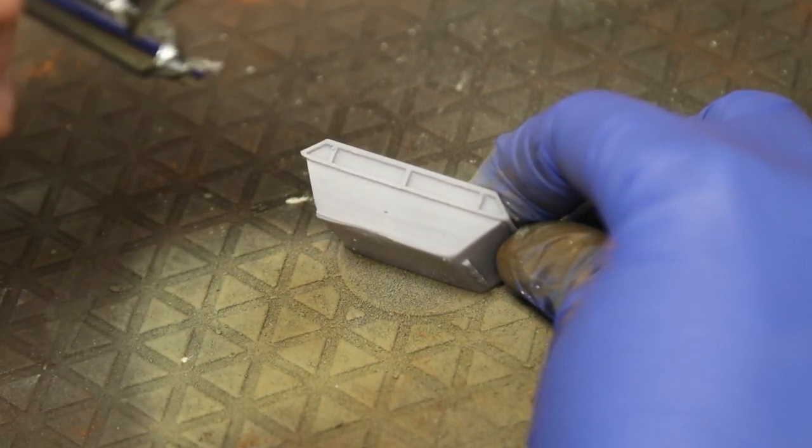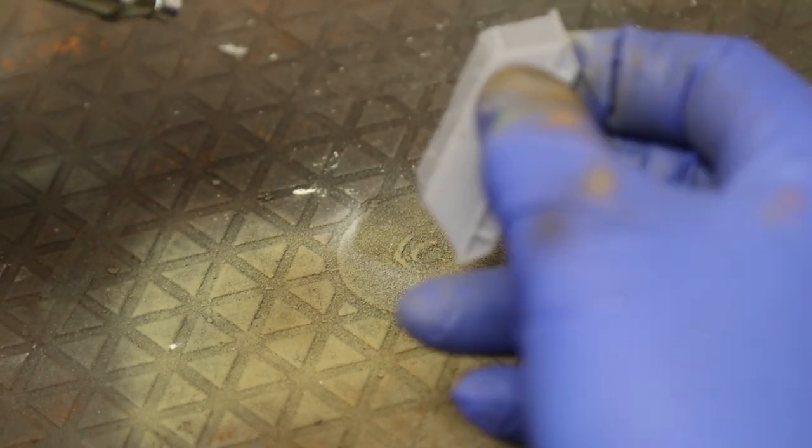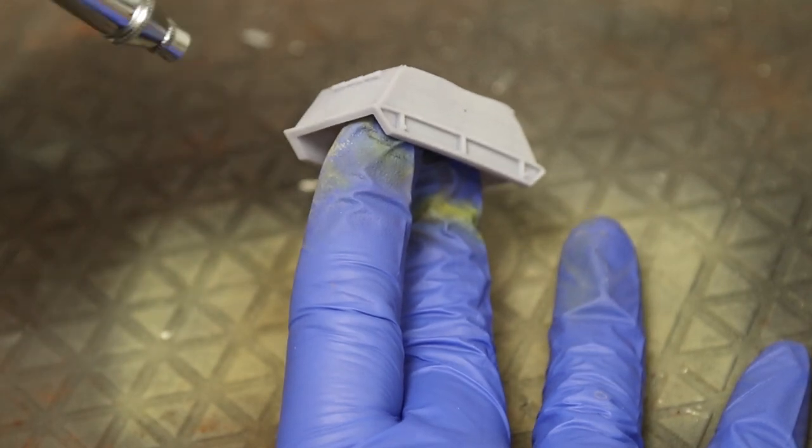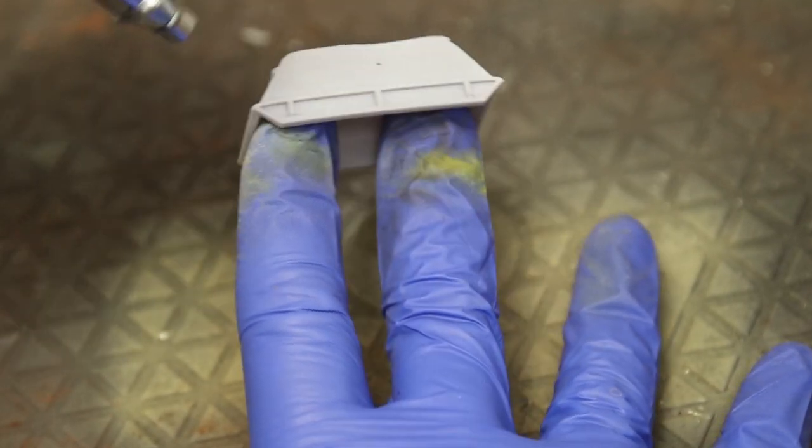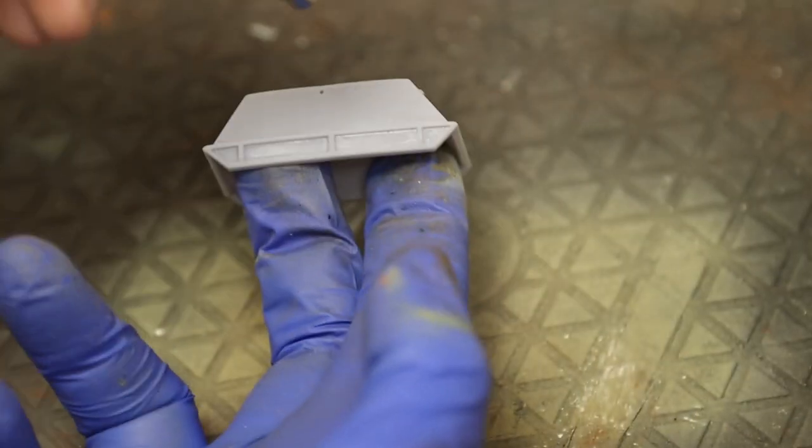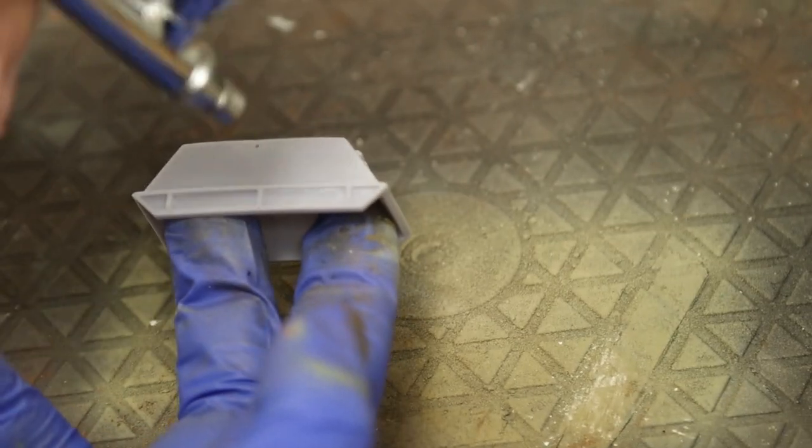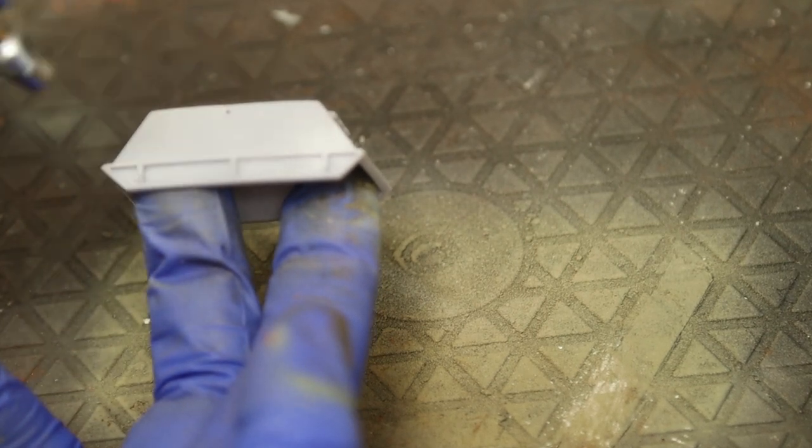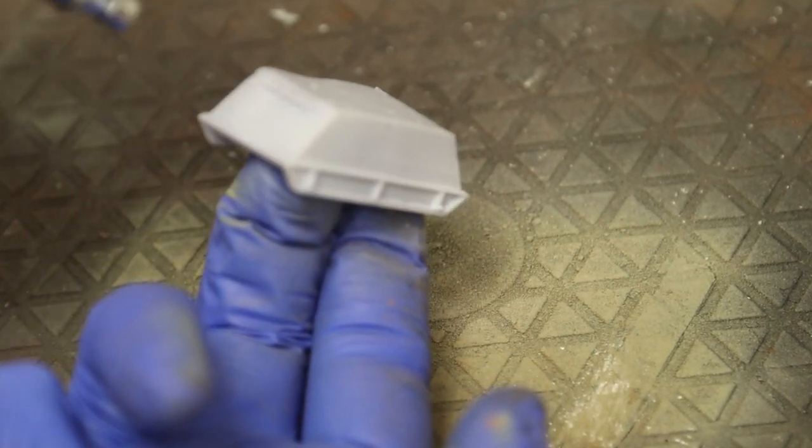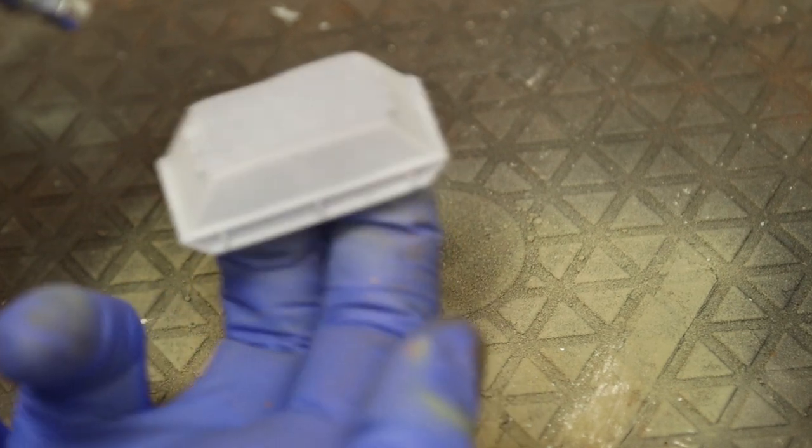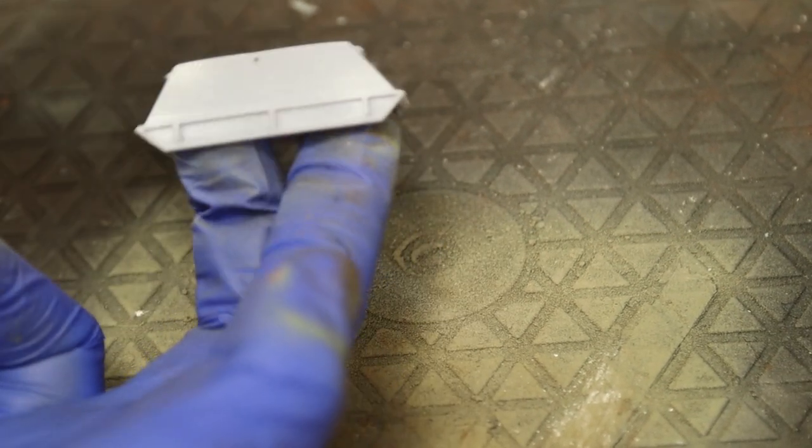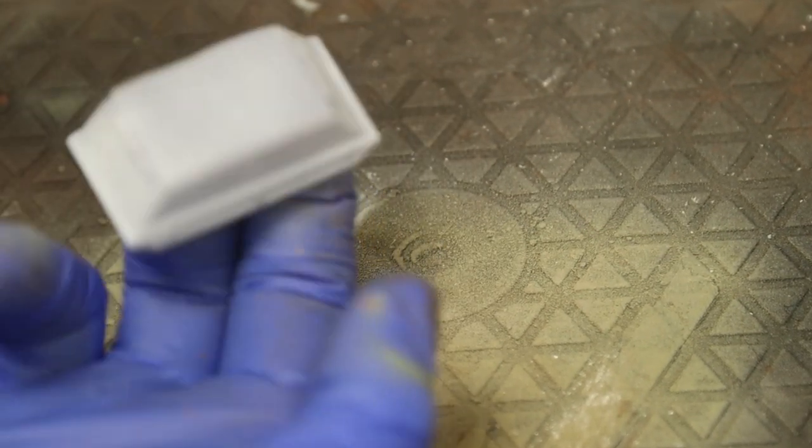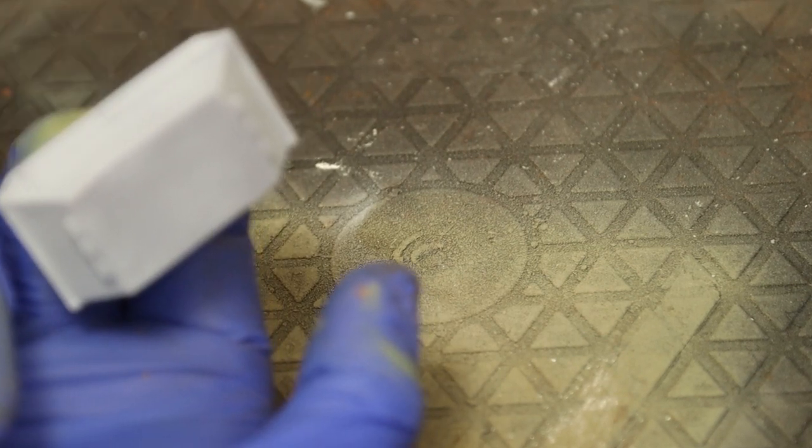So grey it is. This is the Vallejo primer as you saw and this is a particularly exciting part of the video because I am spraying a grey primer onto a grey model. So you can't really see anything. I could be spraying in water for all you know but I promise you there is primer in there. I'm just going to give this one coat and just leave it a little while to dry, probably not long enough, but I just wanted to quickly do this video today.